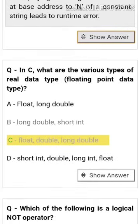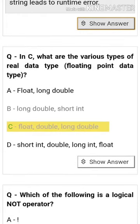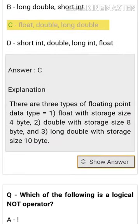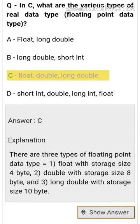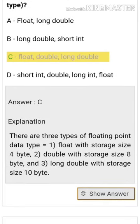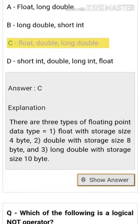In C, what are the various types of real data types? Floating point data types. There are three types: float with storage size 4 bytes, double with storage size 8 bytes, and long double with storage size 10 bytes.